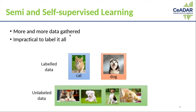Most of the high profile successes of machine learning in recent years have been based off supervised methods using labeled data. But as more and more data is being gathered thanks to increased storage capacities and big data technology, it's becoming impractical to label all of it. This has led to a lot of activity looking at new techniques which can take advantage of both labeled and unlabeled data. Semi and self-supervised learning are two of these techniques.